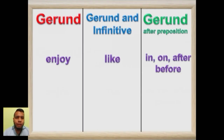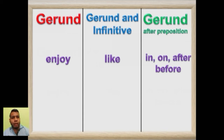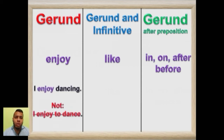Now let's look at some verbs that are followed by gerund, some verbs that are followed by both gerund and infinitive, and gerund after prepositions. Hay verbos seguidos de gerundio, verbos seguidos de ambos, y verbos que siempre llevan gerundio después de una preposición. First example — gerund only: 'I enjoy dancing.'